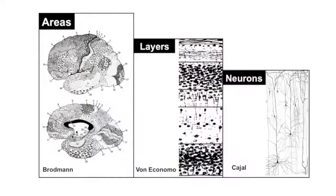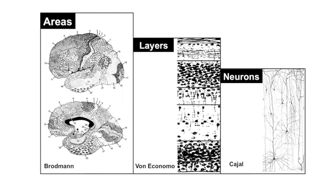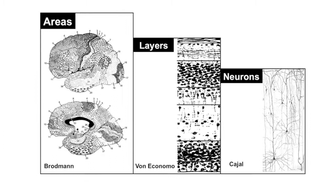The cortex is arguably the most complex structure in our brain. It comprises many types of neurons that populate, for instance, specific areas or layers, each of them displaying specific patterns of input and output.